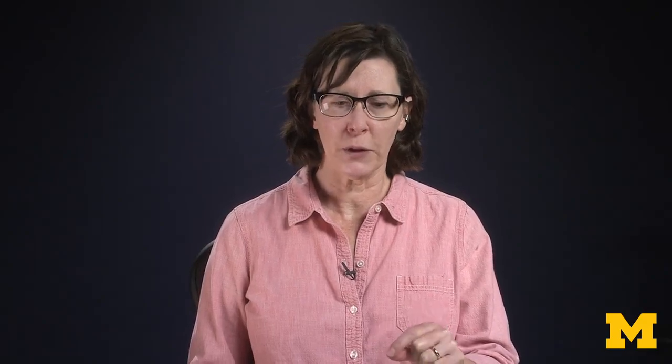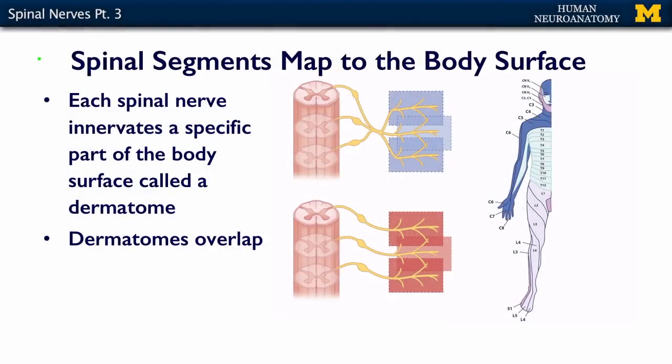Dr. Alsup introduced the concept of a dermatome when she talked about the integumentary system. So in this slide, what it demonstrates is the fact that even simple spinal nerves, shown at the bottom here, it's easy to see how these project to one specific area.